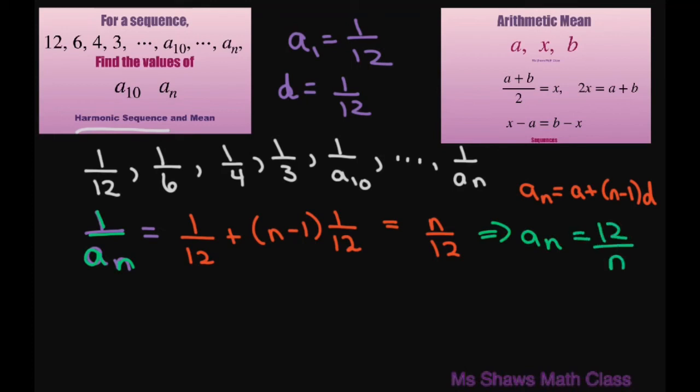You just reciprocal it back. And then a sub 10 is just going to be 12 divided by 10, and that equals 6 divided by 5.